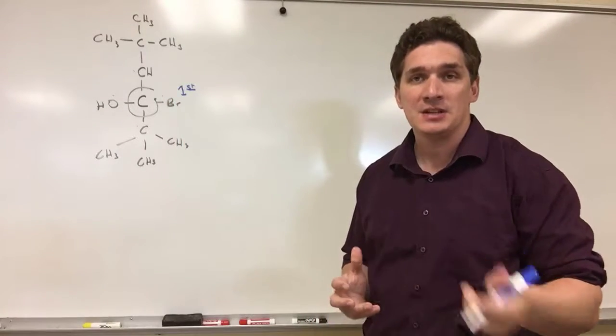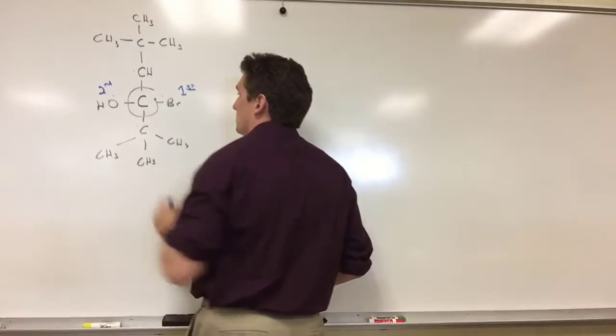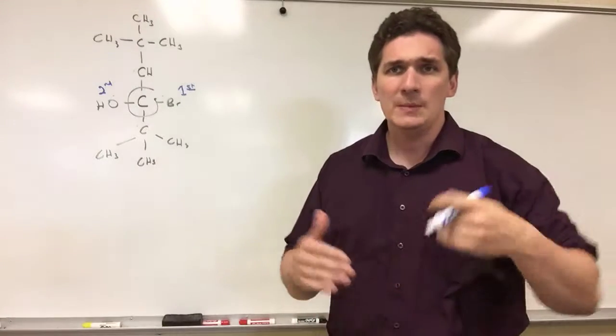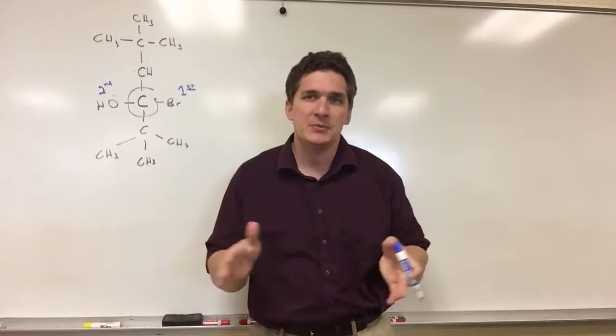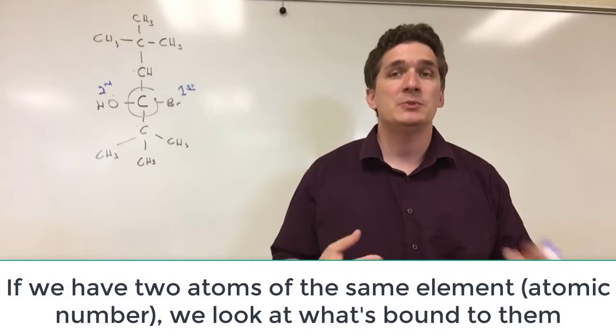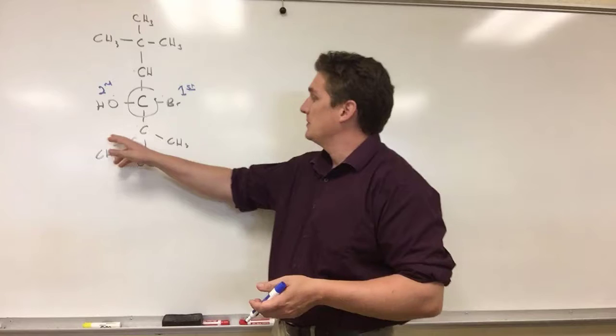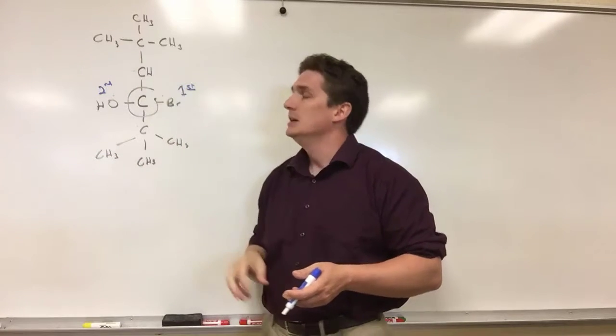Next down the list is oxygen. Oxygen has a higher atomic number than carbon. So this would be second priority. What about carbons? They're ranked the same. Well, what we do next is when we have two neighboring groups that have the same atomic numbers, we look at what's bound to them. So in this case, we have a carbon bound to three carbons and we have a carbon bound to hydrogen, bound to another carbon.